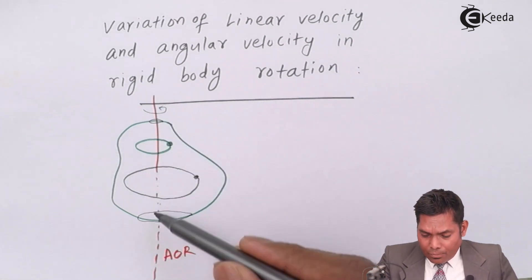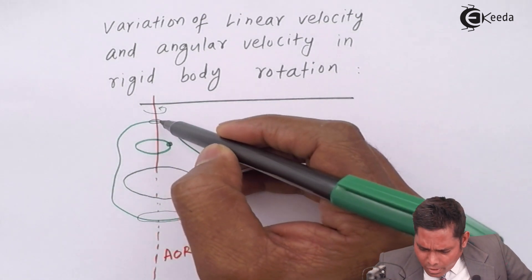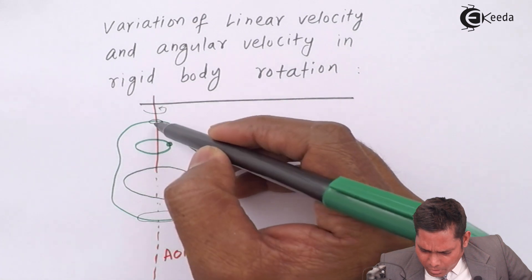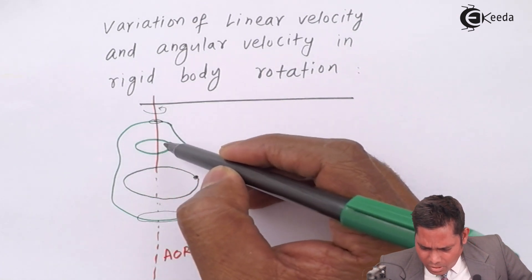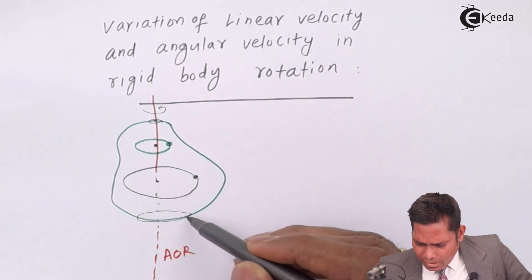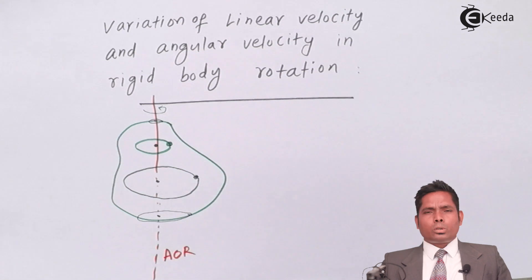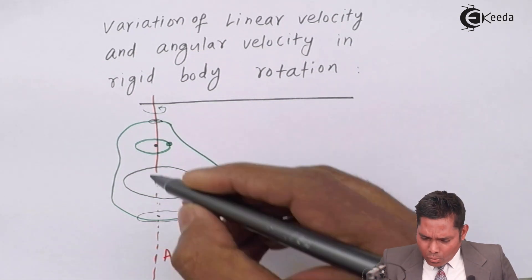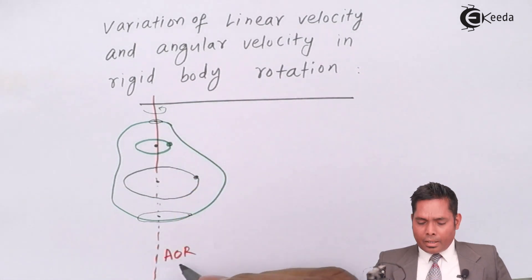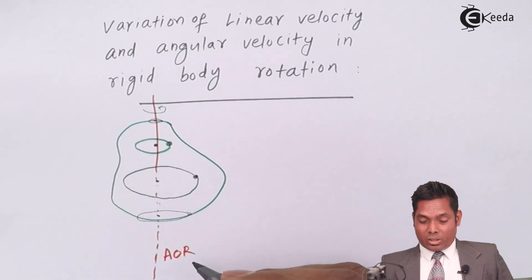So the axis is formed, axis of rotation is that if I talk about this particle rotating about this, this is the center of rotation. If I consider all those particles at the centers and you join the centers, if I join all the centers, it will make an axis and we call that as axis of rotation.